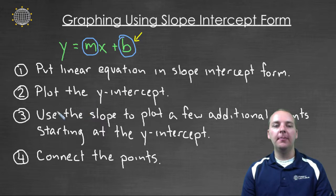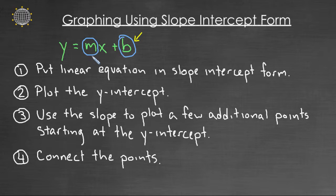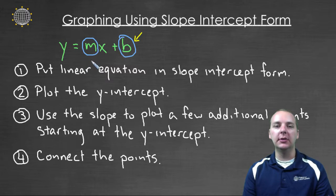Then step three, use the slope, use the m, use the rise over run from one point to the next to plot a few additional points, and the key is to start at the y intercept. So for example, if your slope is two, and so as a ratio that's two over one, you'd start at the y intercept and go up two over one, up two over one, up two over one, and you would get a sequence of points that are all on your line, and you're finding those points by using the slope.